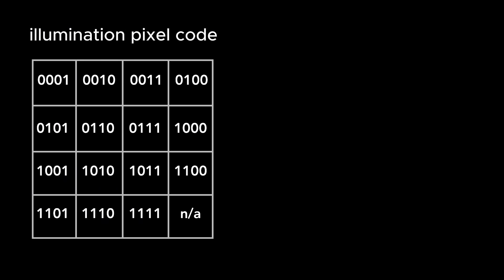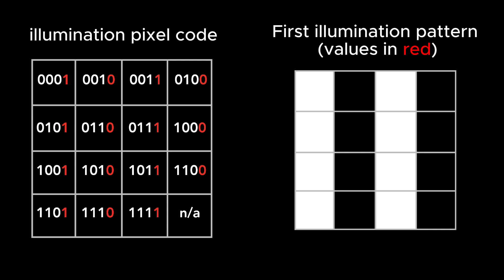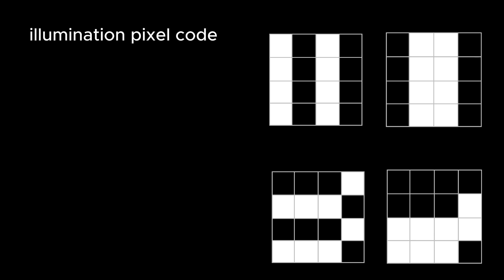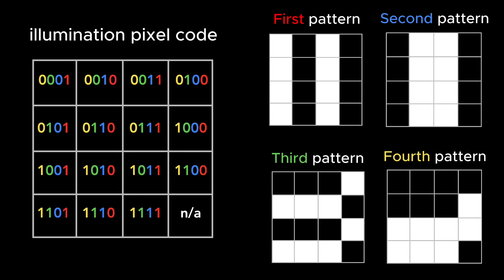Each bit corresponds to a different illumination pattern. If a value equals 1, then that illumination pixel is turned on for that pattern. And if it's 0, then it's off. So for the 4 by 4 illumination pattern, we need to illuminate the scene with 4 patterns. I've color coded each bit to help visualize this.